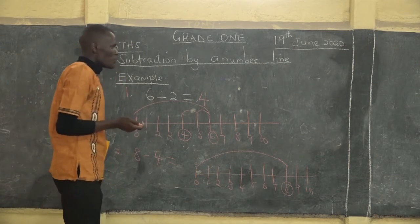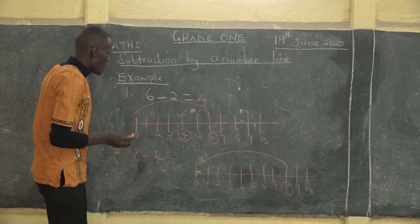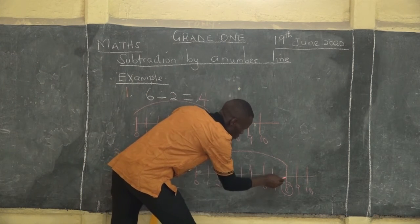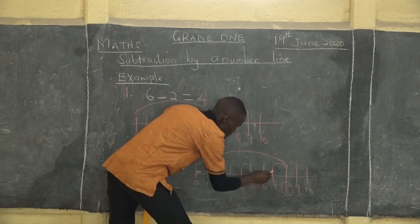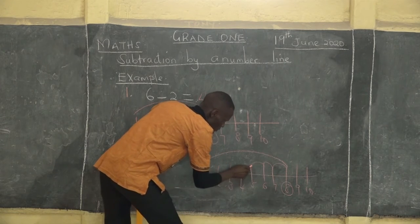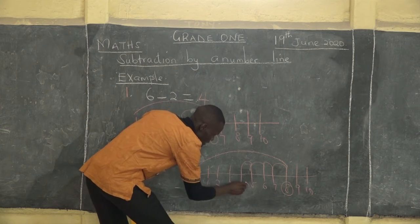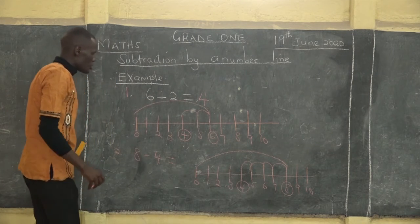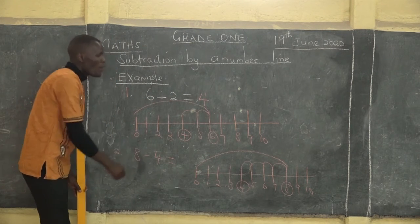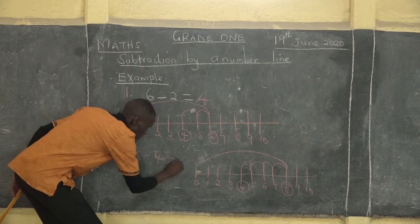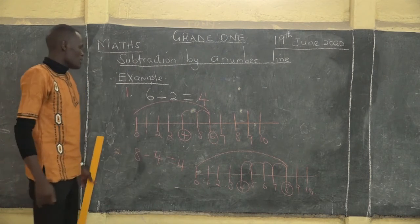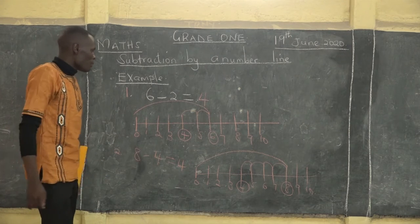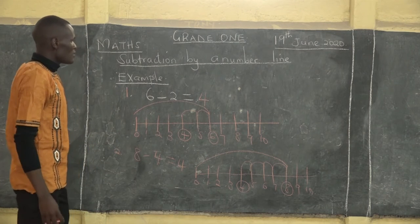Towards your left, because we are taking away. So let us jump on our number line starting from eight: one, two, three, four. And this is our answer. So it means that eight take away four is equal to four.